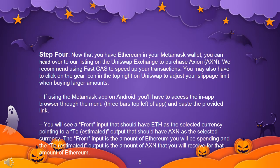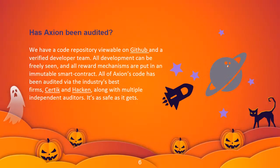Step 4: Now that you have Ethereum in your Metamask wallet, you can head over to our listing on the Uniswap exchange to purchase Axion. We recommend using FastGas to speed up your transactions. You may also have to click on the gear icon in the top right on Uniswap to adjust your slippage limit when buying larger amounts. If using the Metamask app on Android, you'll have to access the in-app browser through the menu and paste the provided link. You will see a 'From' input set to ETH and a 'To' output set to AXN — the from input is the amount of Ethereum you will be spending and the to output is the amount of AXN you will receive.